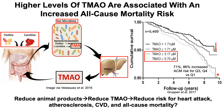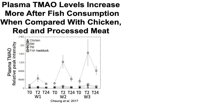So based on this data, the idea would be: if you reduce animal products, you'll reduce circulating levels of TMAO, and then potentially reduce risk for heart attack, atherosclerosis, CVD, and all-cause mortality. But there's more to this story, and it involves the impact of fish. Fish directly contains TMAO. So what happens if you eat different meals — whether it's fish, chicken, red, or processed meat?